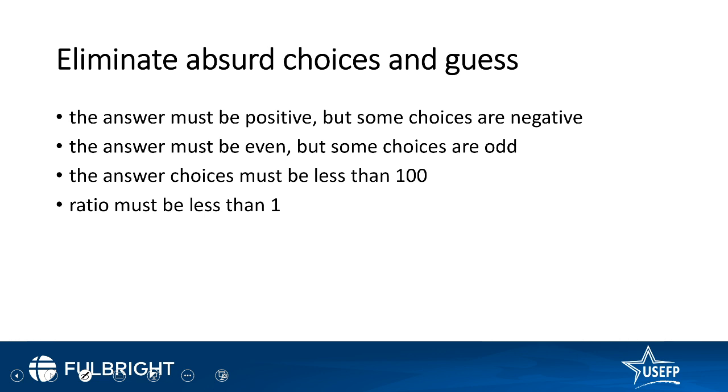So by looking at it you find that the answer must be positive but some choices are negative, so negative choices go out. Then by looking at the answer you think that the answer must be even but the choices are given to be odd. Then in a question it looks that the answer is less than 100 but it is more, so those you can eliminate.